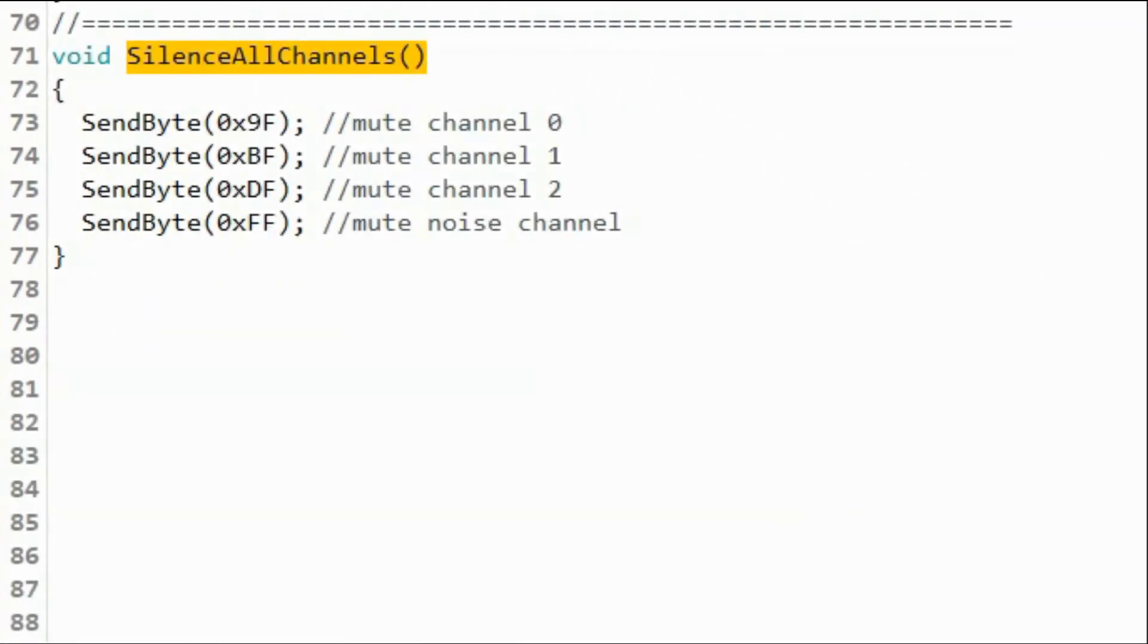Inside function silence all channels, we send four bytes to mute the four channels: channel 0, 1, 2, and the noise channel. And the bytes are sent by calling this function here.